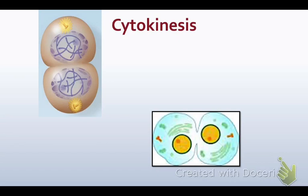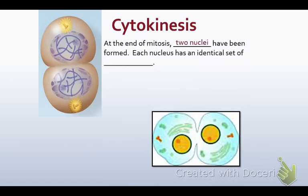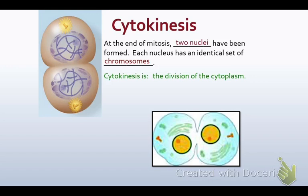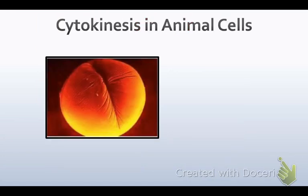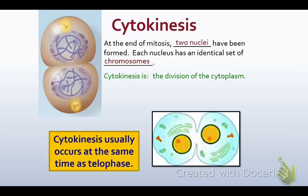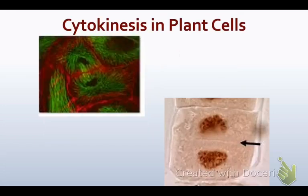The last part of cell division is its own step called cytokinesis. At the end of mitosis, two nuclei have been formed, and each nucleus has an identical set of chromosomes. Cytokinesis is the division of the cytoplasm, and it usually occurs at the same time as or a little bit after telophase. In animal cells, a cleavage furrow pinches the membrane inward until it's separated into two new cells.